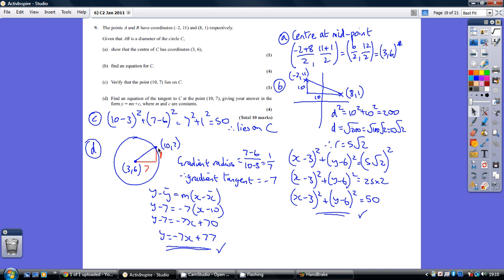Now, the gradient of the radius, we can work out just, again, by just dropping down and across perpendicular to get a right angle triangle. So, the gradient of the radius is y step over x step is 1 over 7.